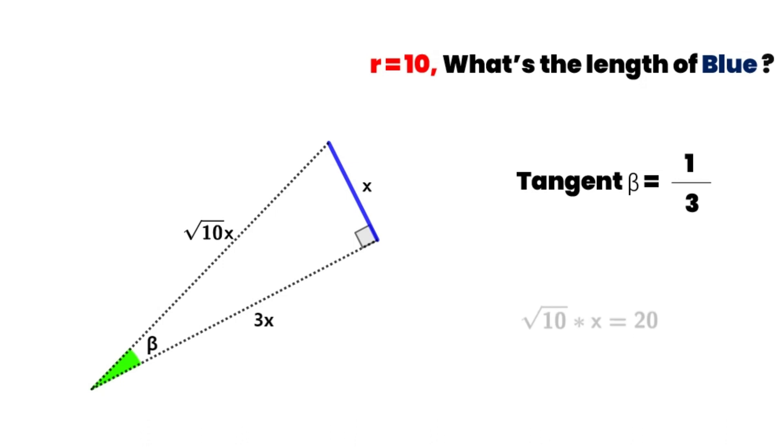We can get square root of 10 times X is equal to 20. X is equal to twice the square root of 10. So the blue segment is equal to twice the square root of 10. This is the final answer.